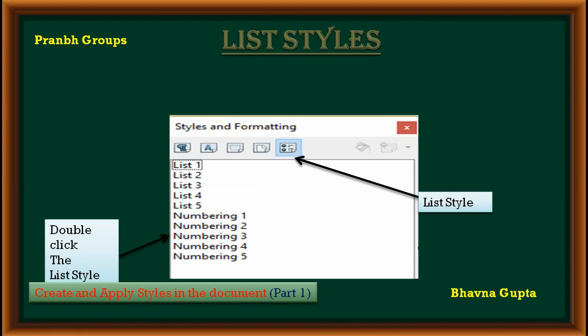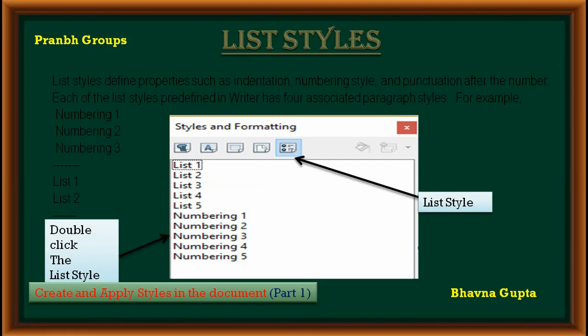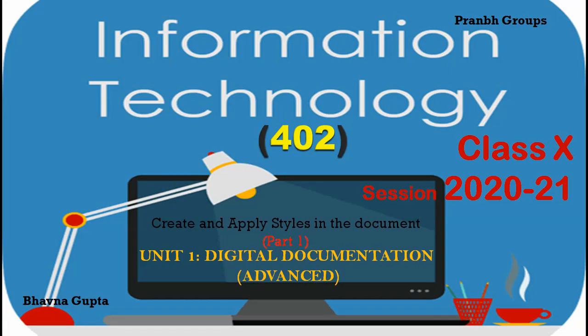The last style is list style. First, open the Style and Formatting window, then select the list style icon, and then double-click on the desired list style. List styles define properties such as indentation, numbering style, and punctuation. In this video you learned about different types of styles.